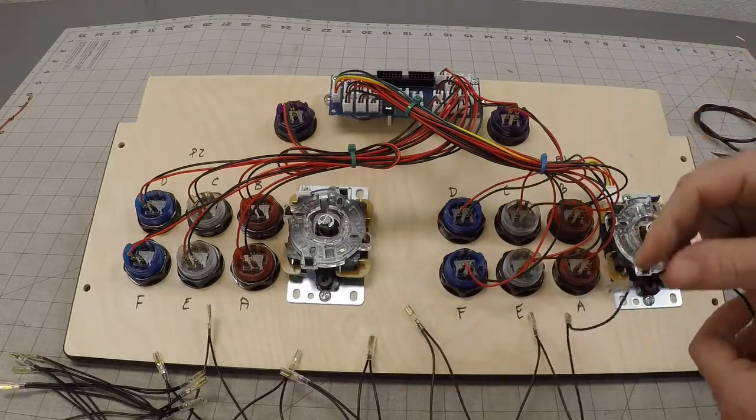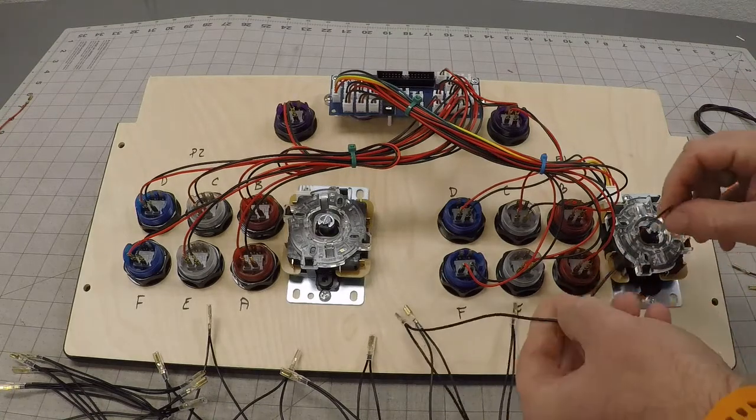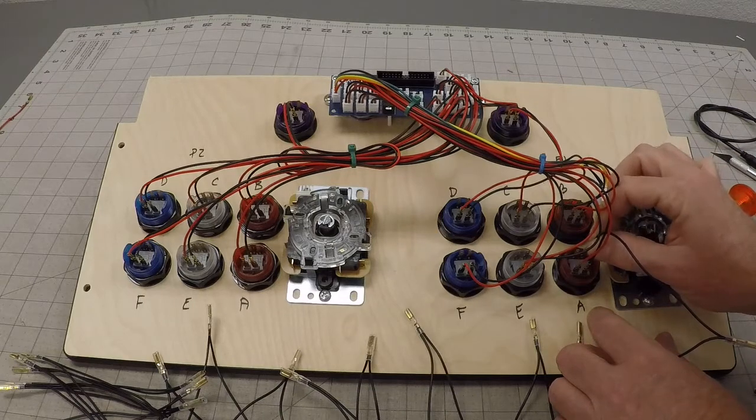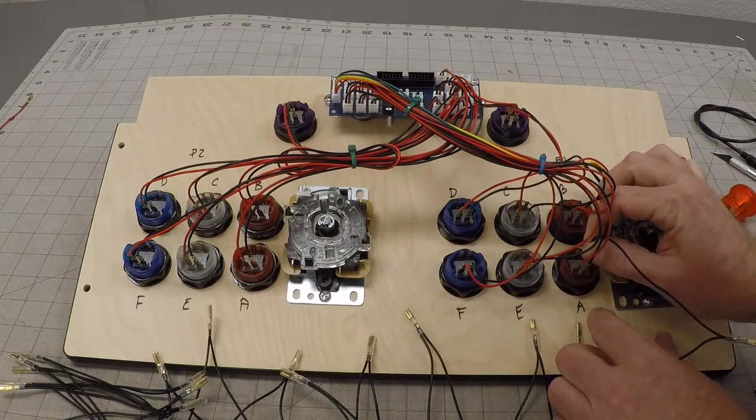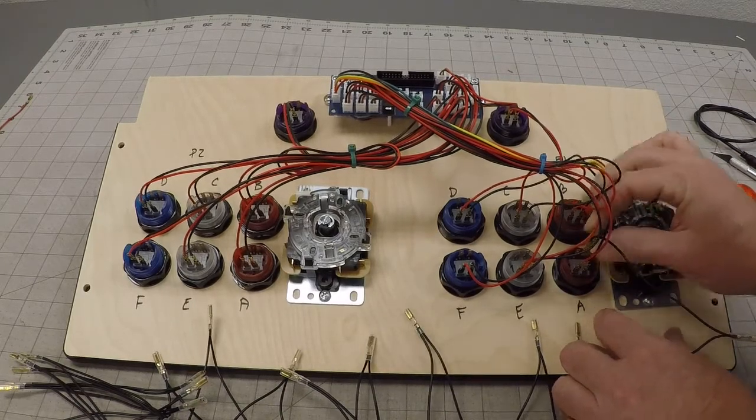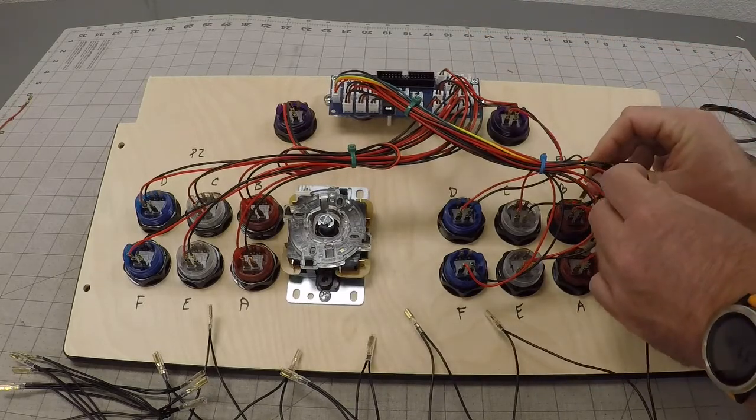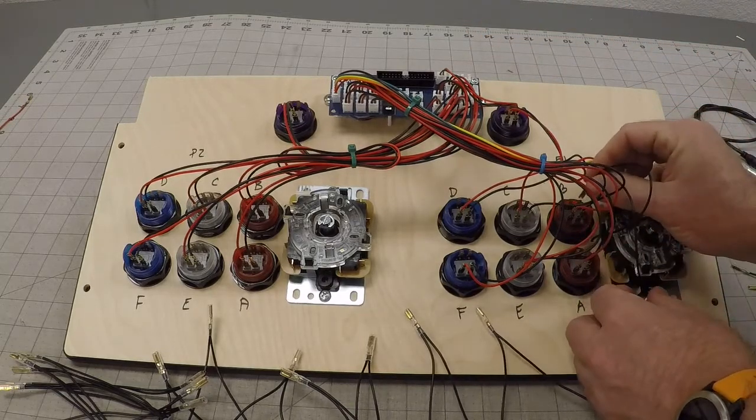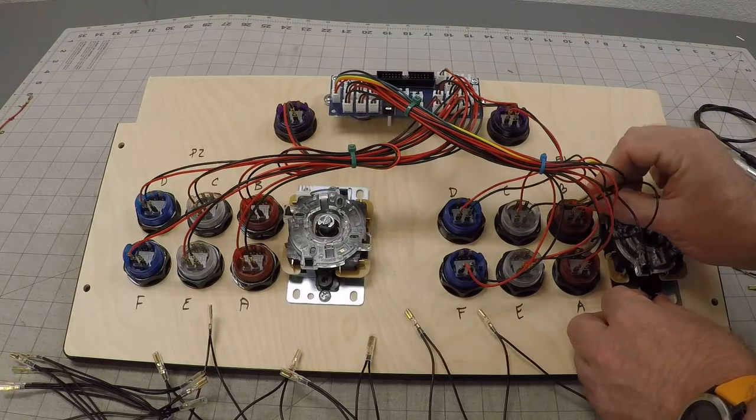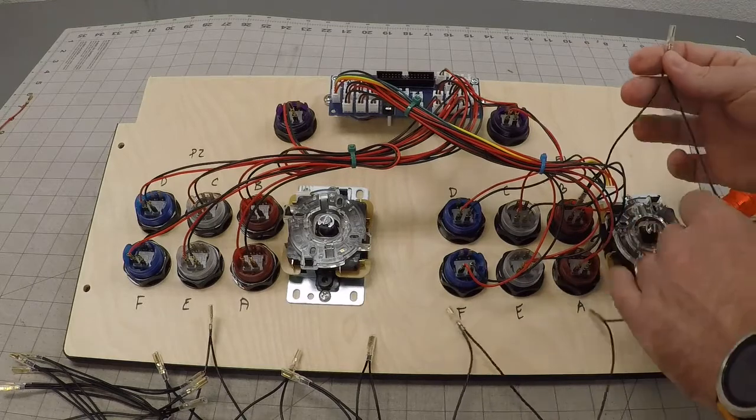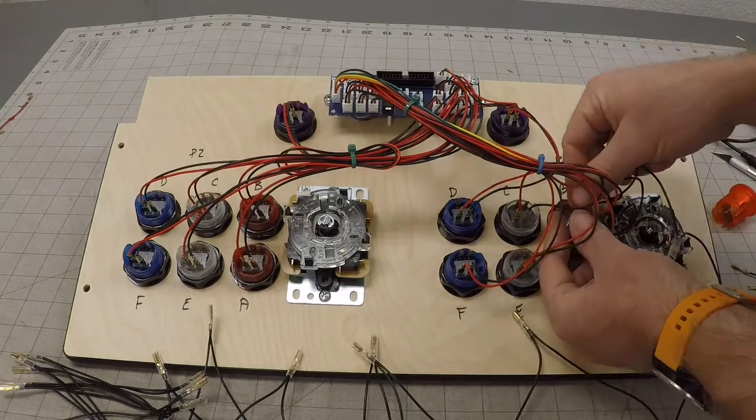The minus is on the outside so let's hook all the minuses up first and you kind of want to think how you're going to do this and do it as short jumps as possible. You don't want to jump all over the place. The LED harnesses for the most part they're set up for 18 buttons or 16 buttons so you don't have a whole lot of extra.